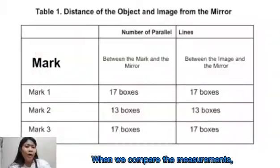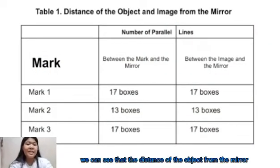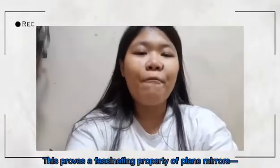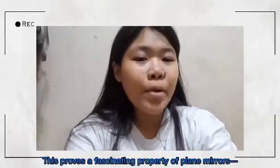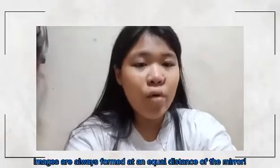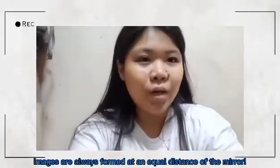Here's the cool part. When we compare the measurements, we can see that the distance of the object from the mirror is the same as the distance from its image. This proves a fascinating property of plain mirrors: images are always formed at an equal distance from the mirror.